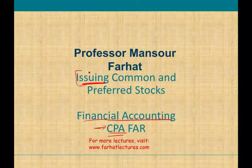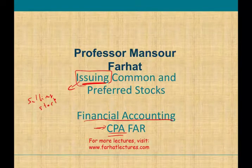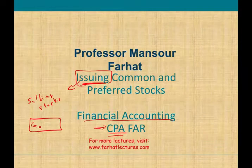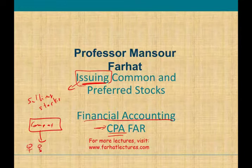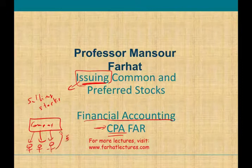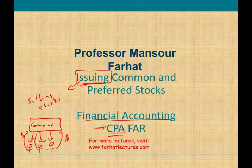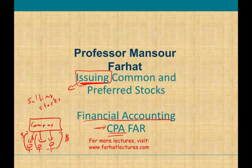The first thing we want to talk about is the term 'issuing.' When we say issue, it means the company selling stocks. We're talking about a company selling stocks to individuals or other companies — to another entity. The company issues the stocks, and in return the individuals invest money. So every time I use the word issuing in this context it means the company selling stocks to shareholders.